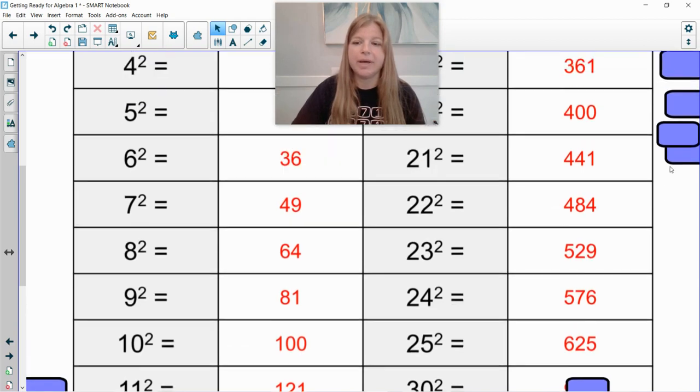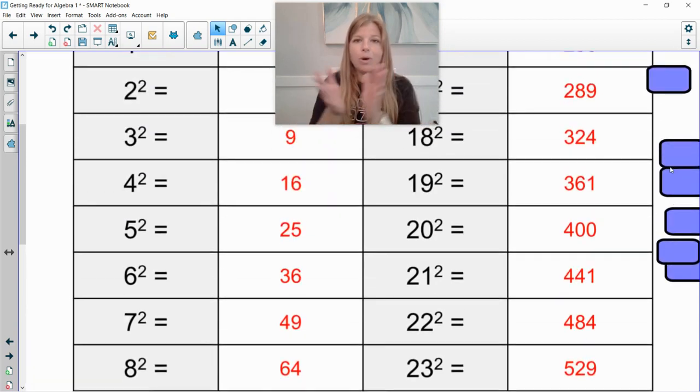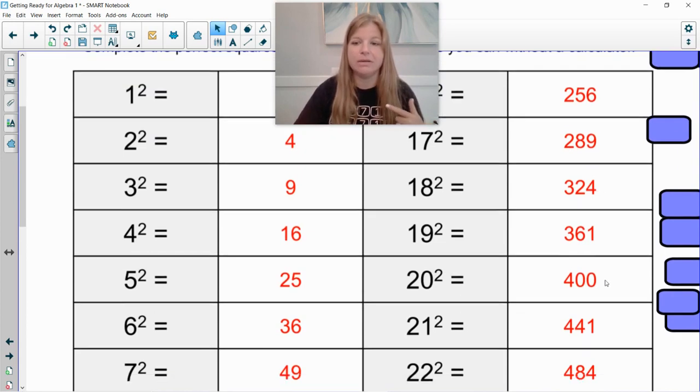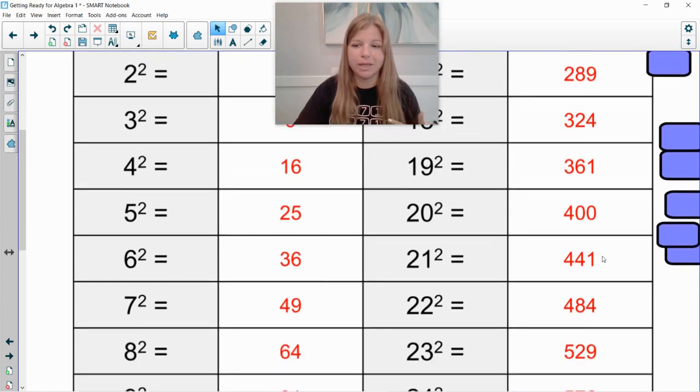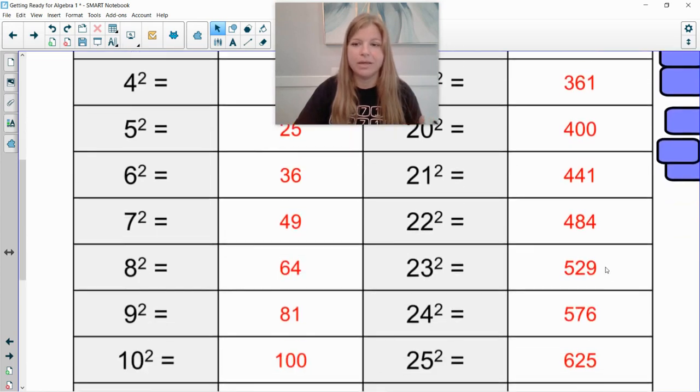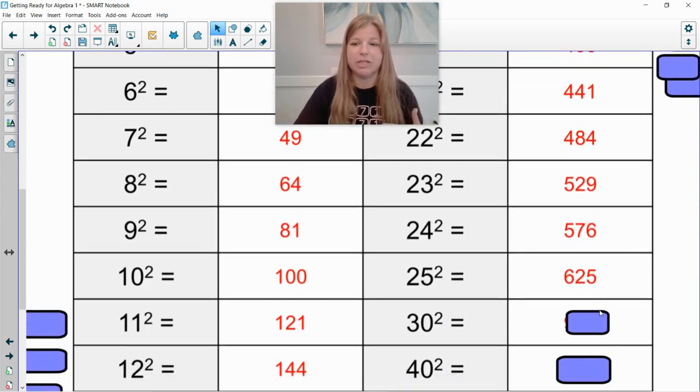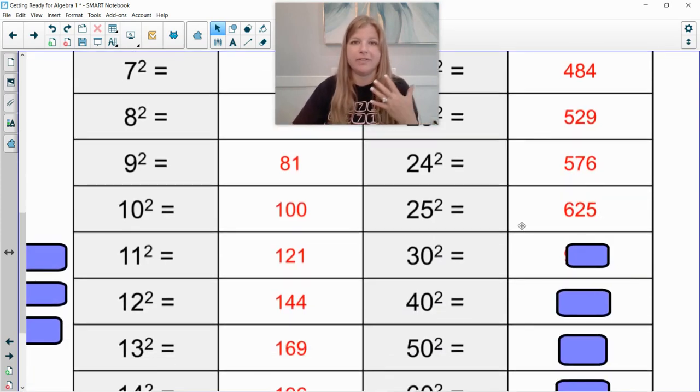Okay so after you have 169, 196, 225, 256, that's where we go to 289, 324, 361, 400, 441, 484, 529, 576, 625. And truly up to 25 squared is definitely a feat. It's important to know this going into algebra 1. It's going to make a lot of the problems way easier when you get into the second half of the year for sure.